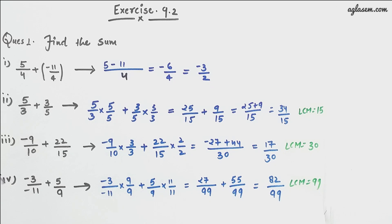Hello, welcome to our channel Aglas M. Schools. In this video, we will be covering exercise 9.2 of chapter 9, Rational Numbers, of class 7th in the NCERT textbook. This chapter is basically about rational numbers. So, let us begin with exercise 9.2.